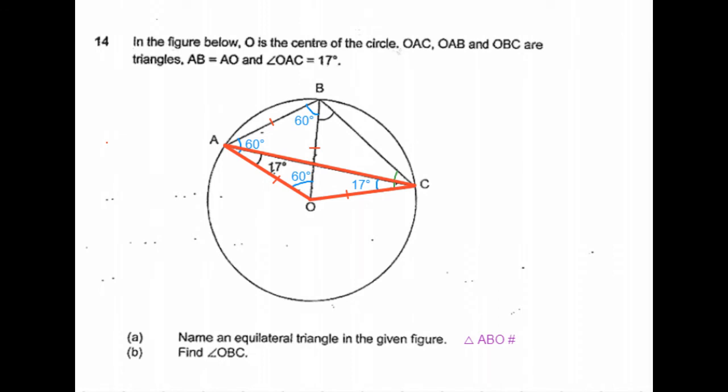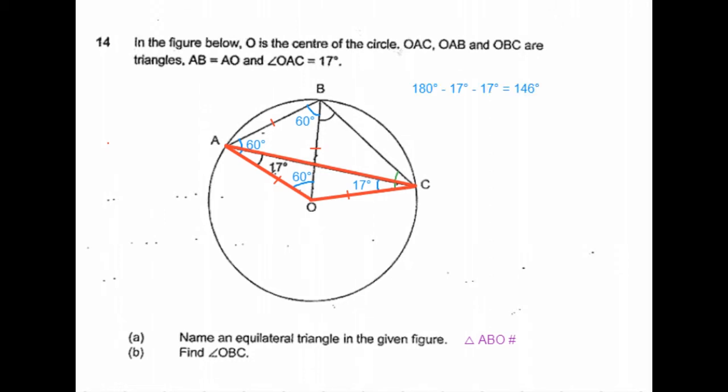Given that OAC is 17 degrees, OCA will also be equal to 17 degrees. So now we can find the angle at O. The sum of the angles inside the triangle is 180. So 180 minus 17 degrees minus 17 degrees is 146 degrees. So let's mark that.